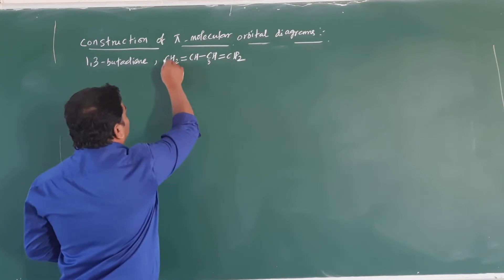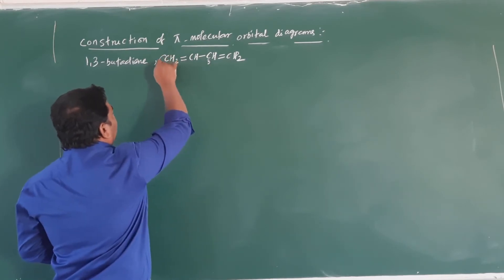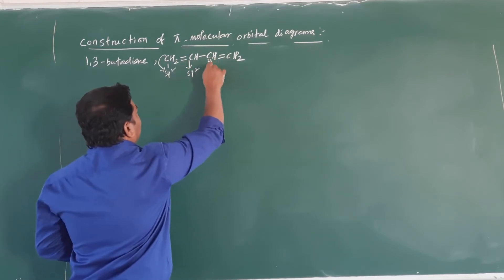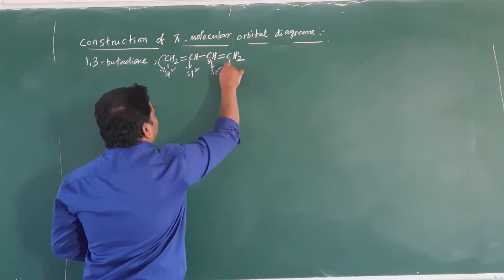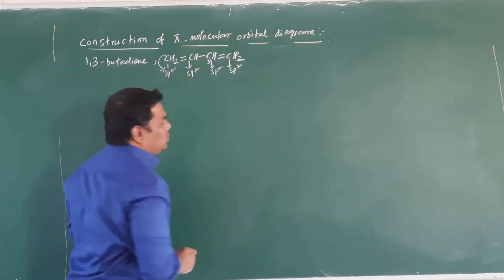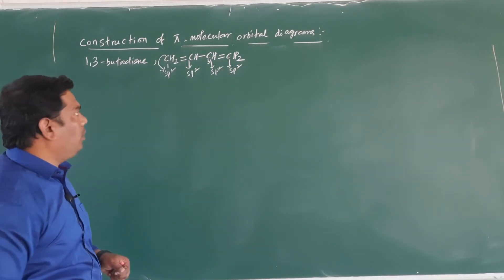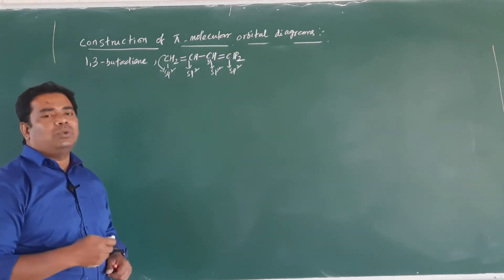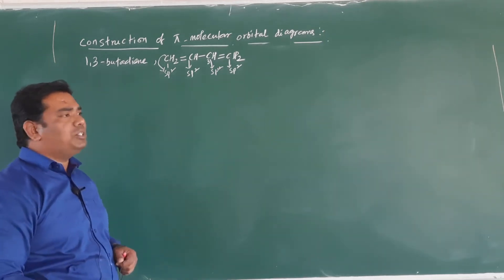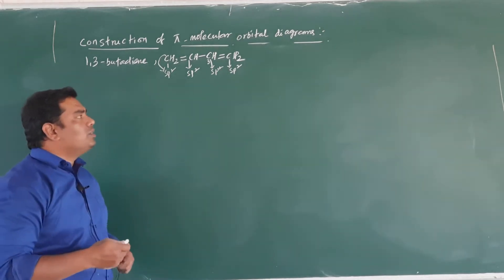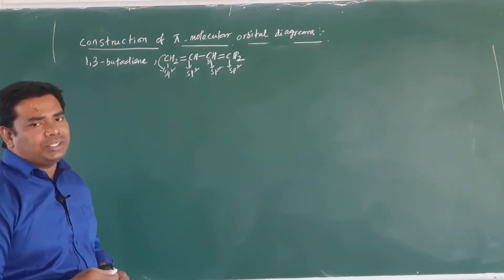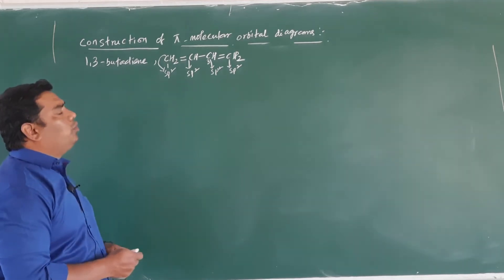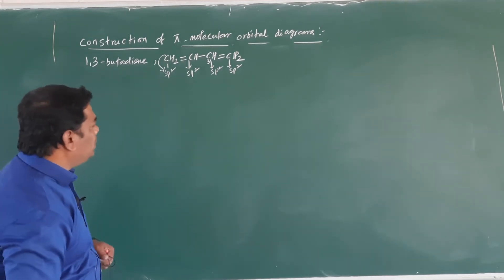In 1,3-butadiene, all the carbon atoms exhibit SP2 hybridization. Each carbon atom is SP2 hybridized. We will now discuss how the construction of the molecular orbital diagram of 1,3-butadiene takes place.